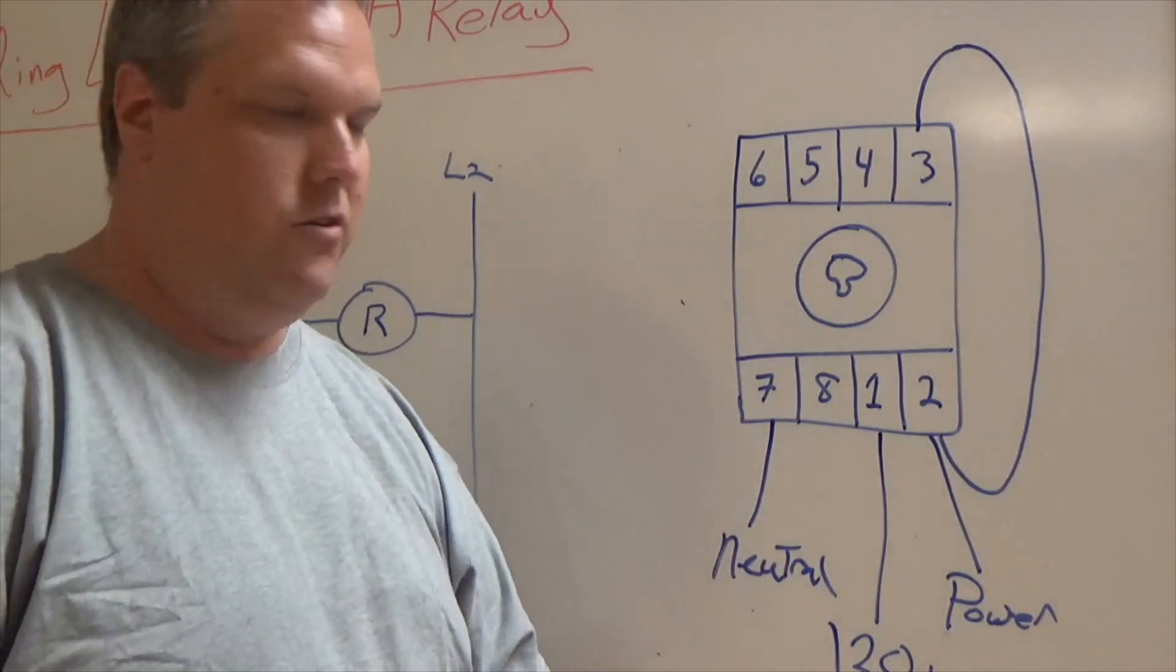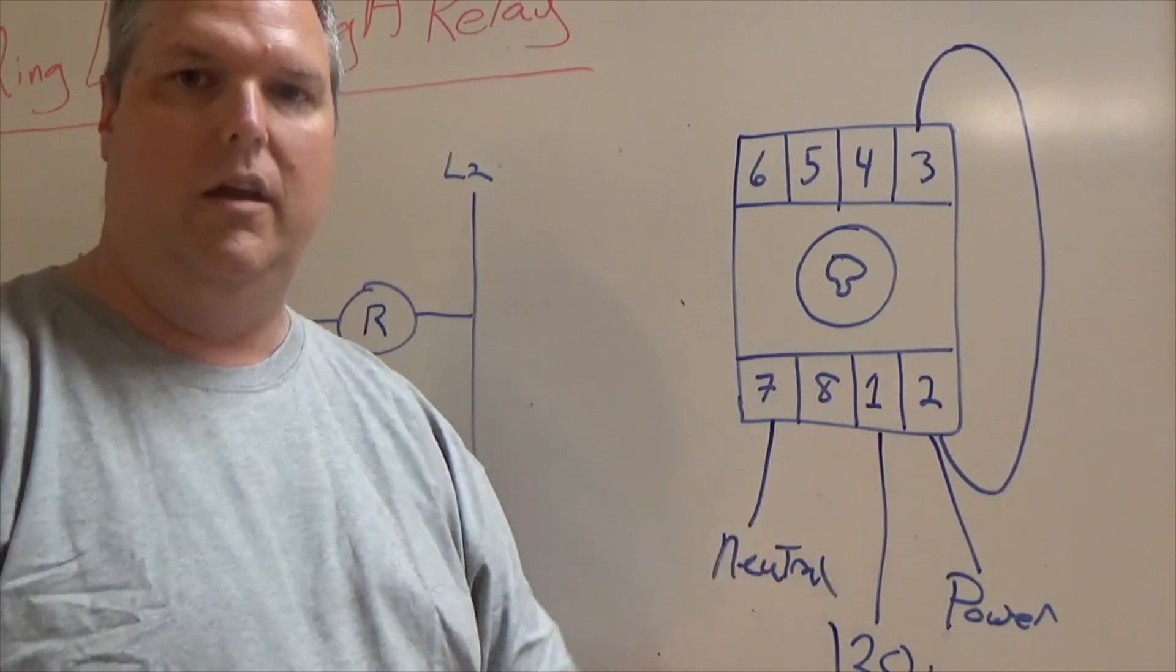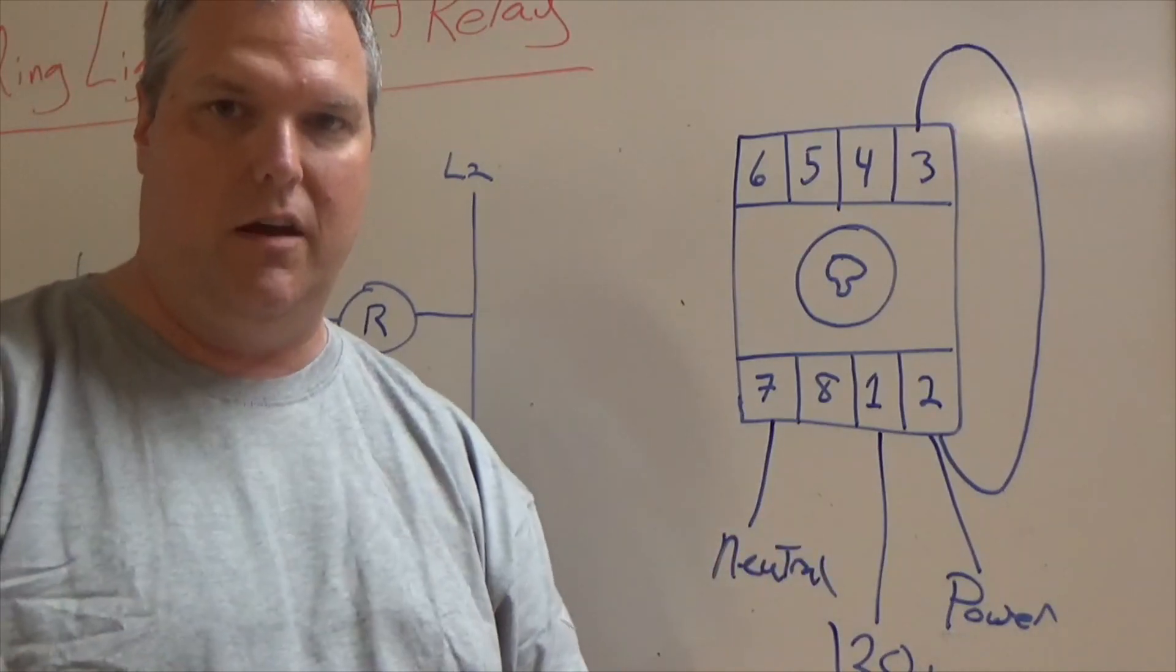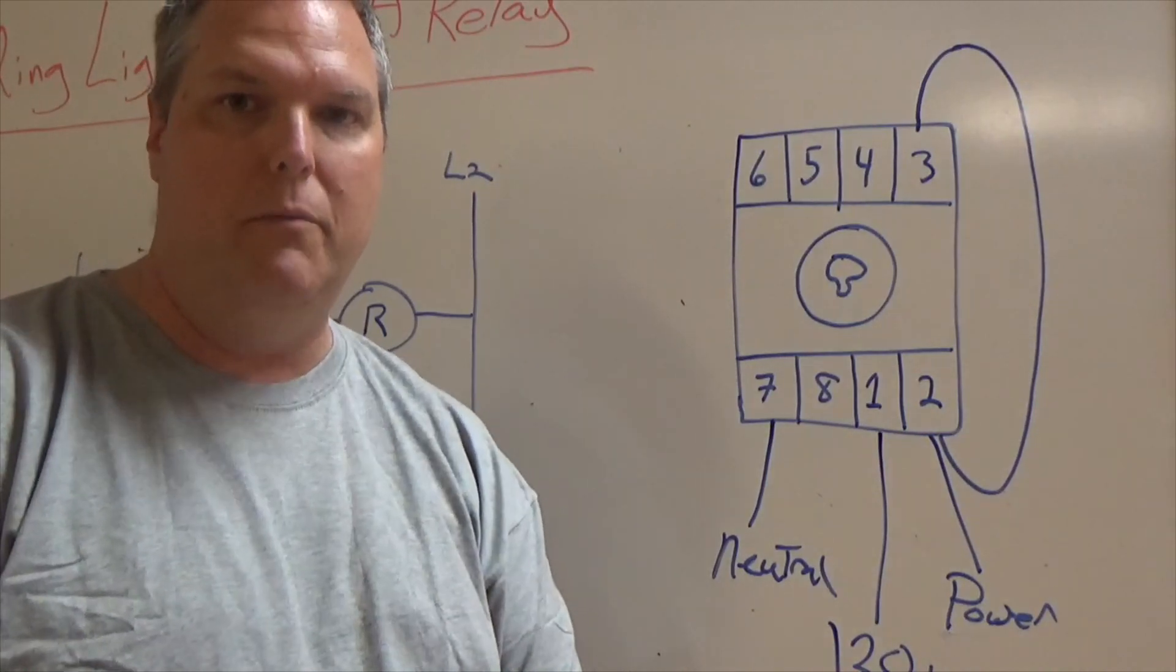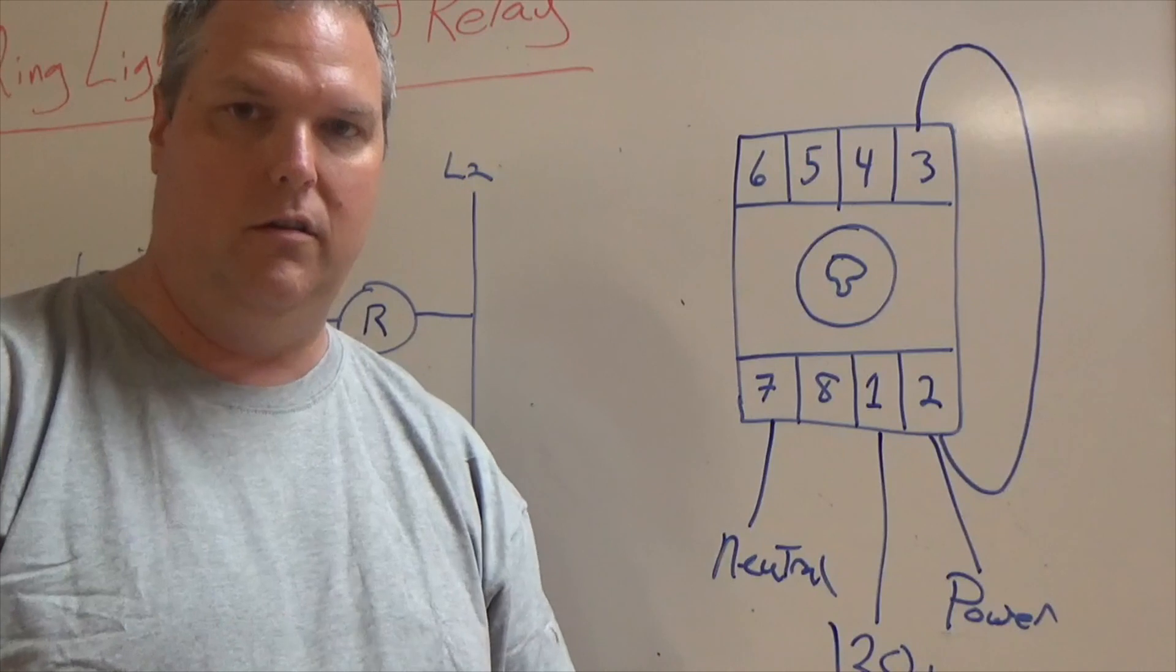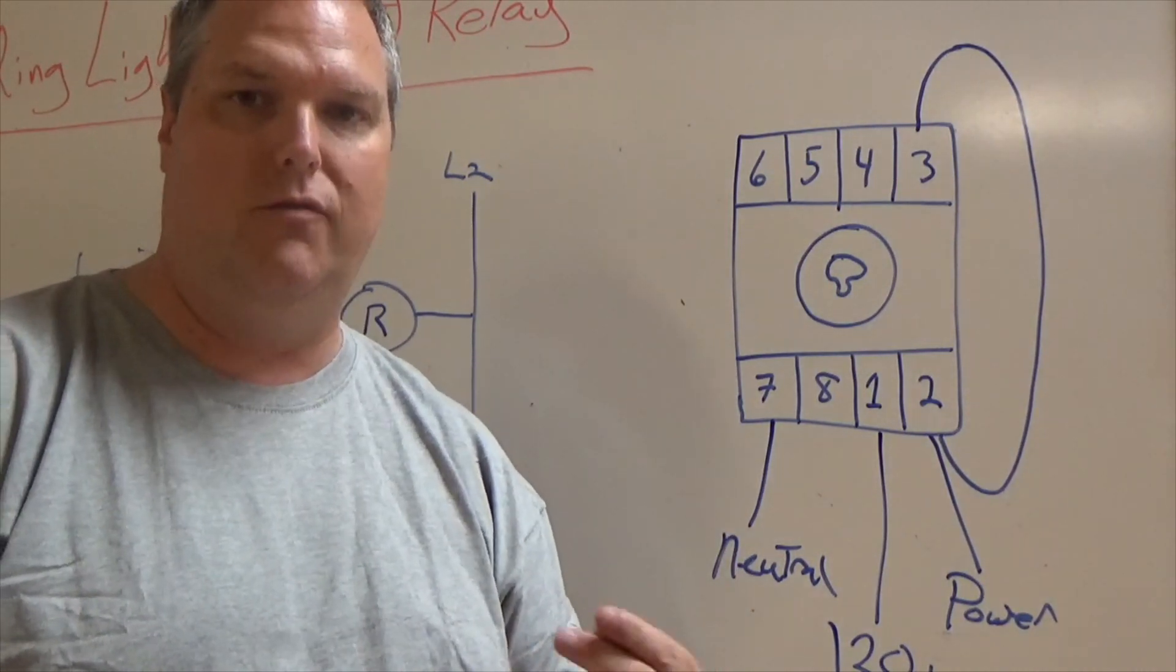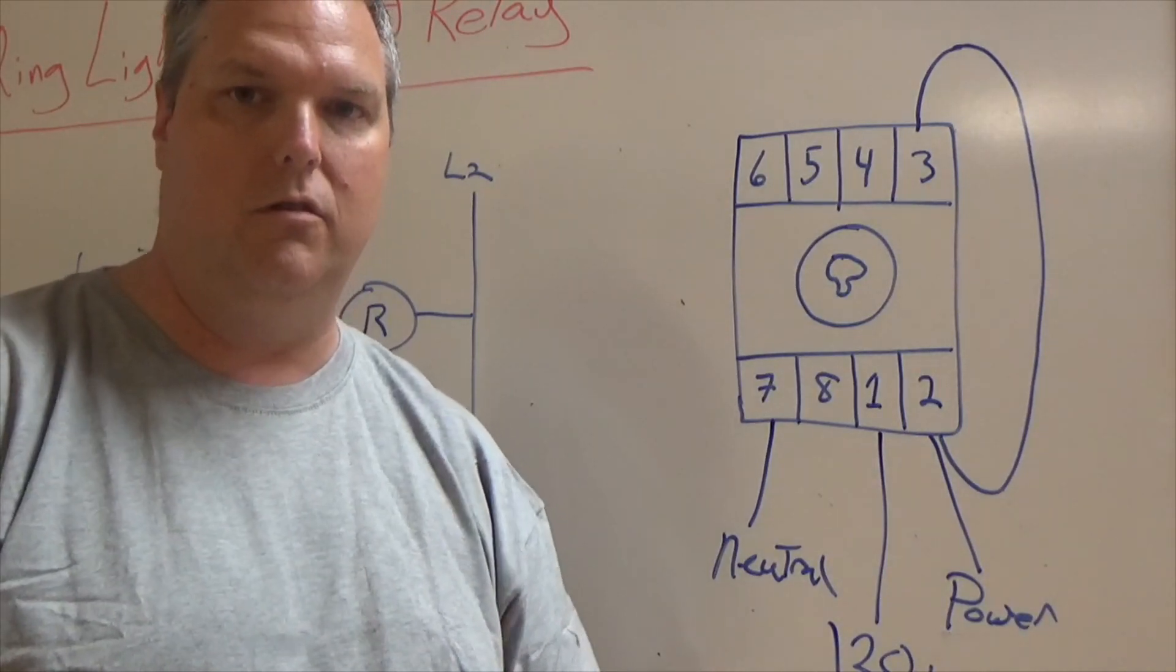The first thing I need you to understand is we brought 120 volts into one in order to power our hold. Because if you remember in the last video, if you watch my holding video, which is in the link above, you'll remember that when we energize the coil, our contacts change. So our contacts go from normally open and normally closed to open and closed.